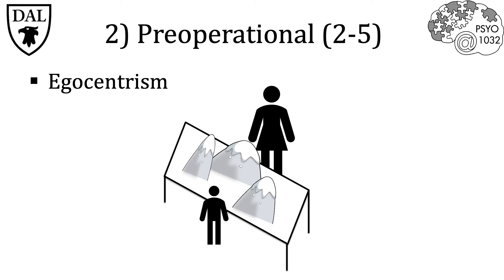The third quality is egocentrism, which is viewing the world from one's own perspective while being unable to view it from another person's perspective. This theory is illustrated by one of Piaget's classic experiments: the three mountains task. Three slightly different mountains are arranged on a table with a child on one side and a doll on the other. The child is given three drawn perspectives and asked to pick the one the doll was likely looking at. A child in this stage will pick the perspective they themselves are seeing every single time, as they're unable to imagine what the doll's perspective might be.